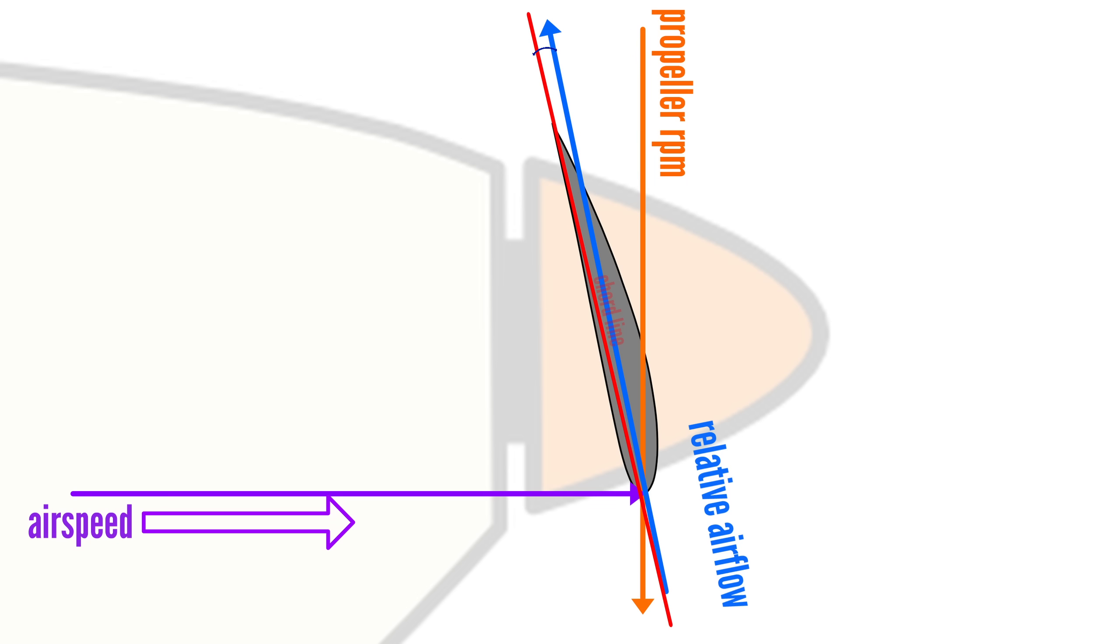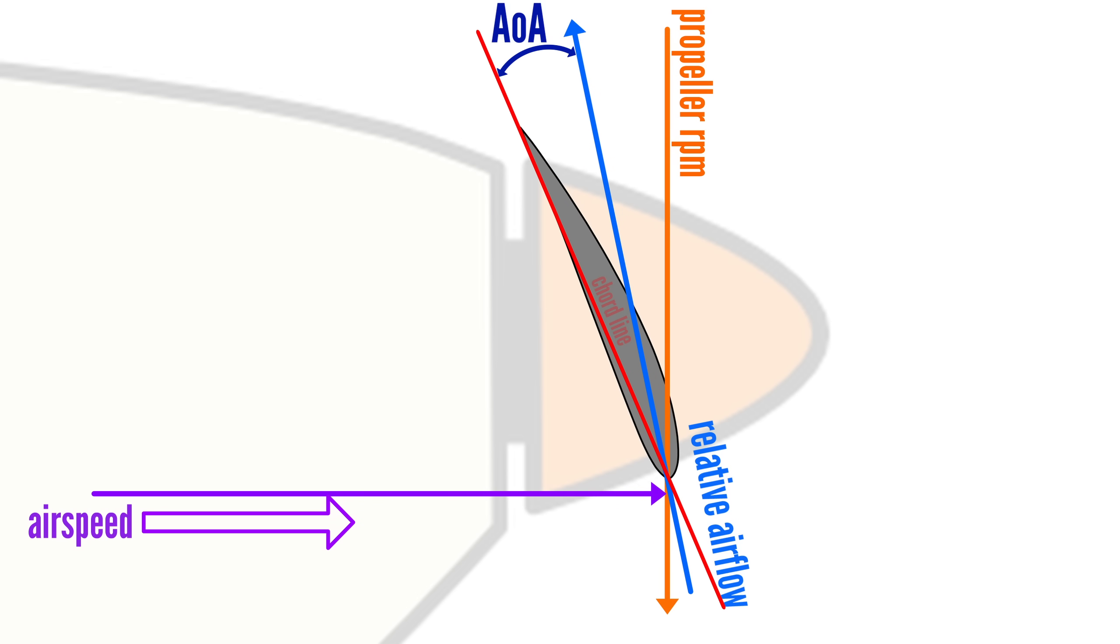This effect can be mitigated by setting a ground adjustable propeller to a coarser pitch, which allows the blades to generate more thrust at higher airspeeds. However, this adjustment comes with a trade-off. The lower the airspeed, the more the blade's angle of attack increases. That sounds good. More angle of attack means more thrust, right?